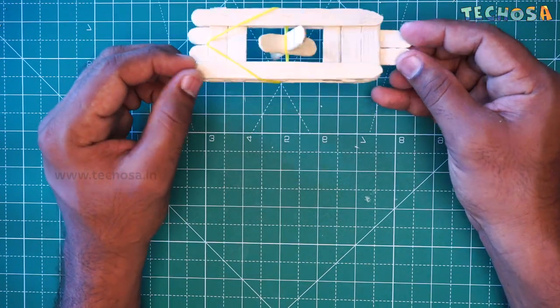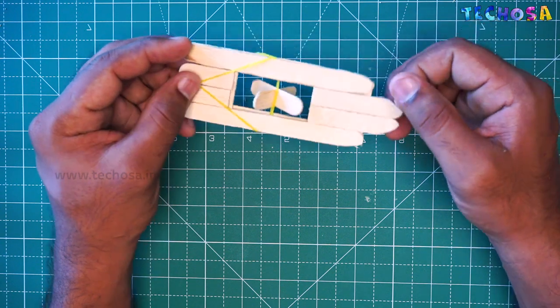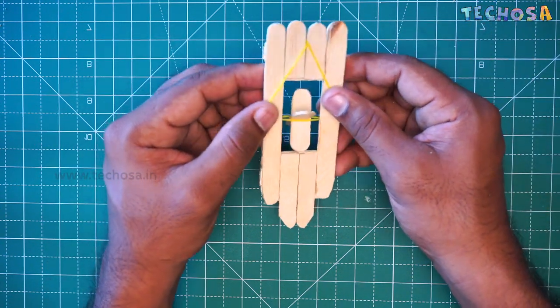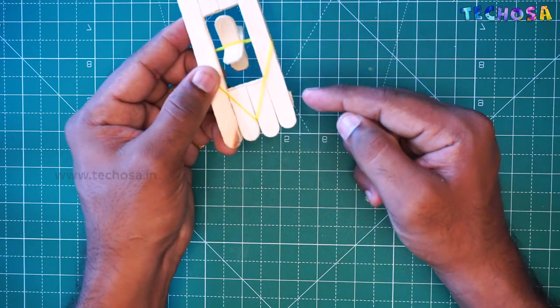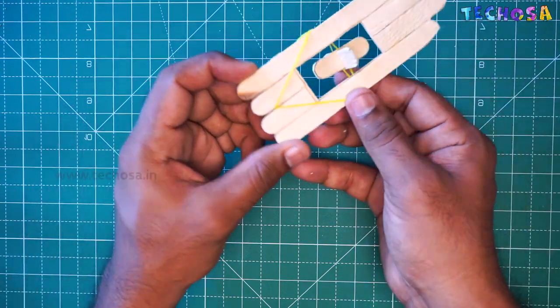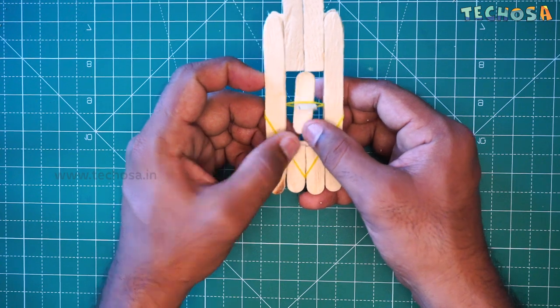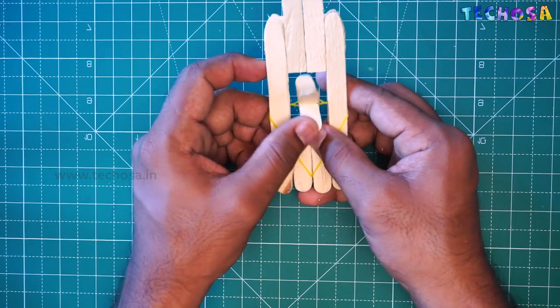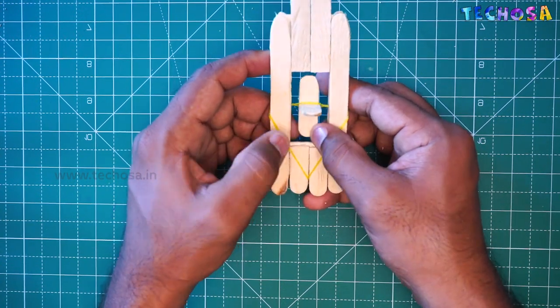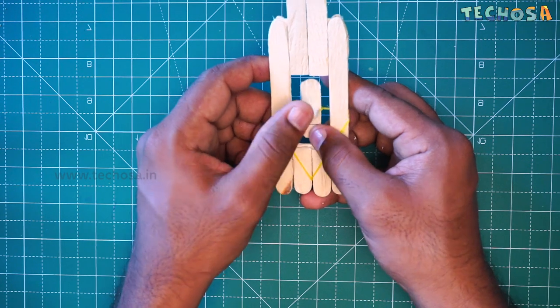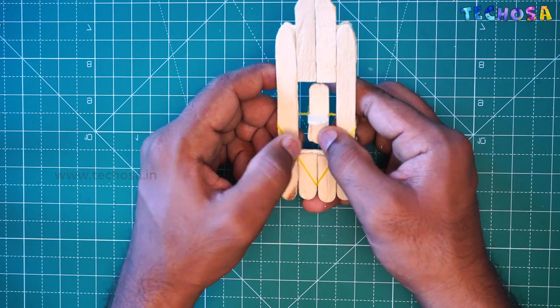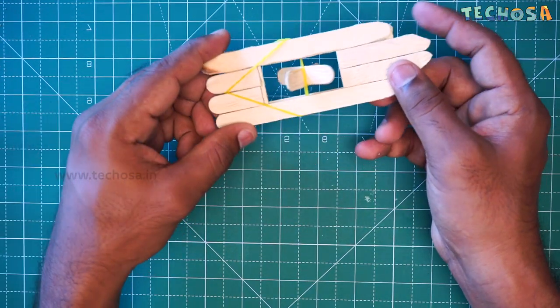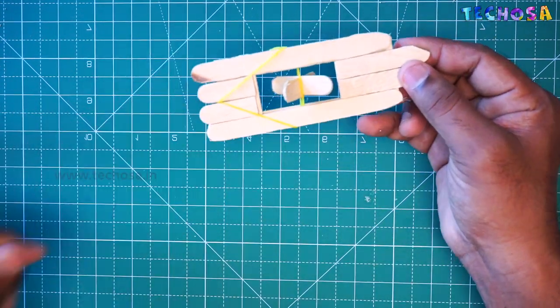So our pedal board is ready. Just twist the pedal several times backward in this way so that we can get the board into walking condition. Now let's check how this pedal board works.